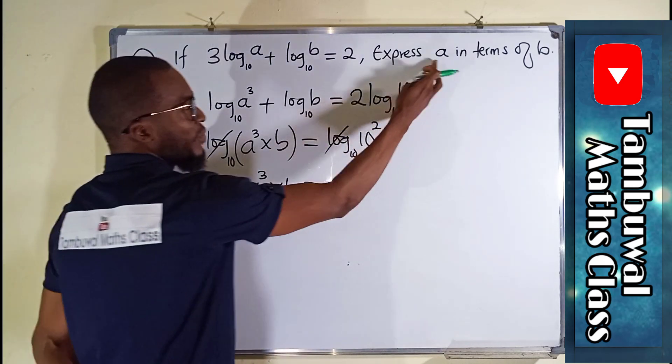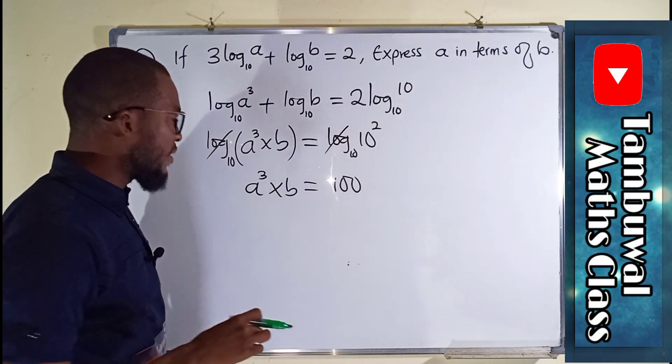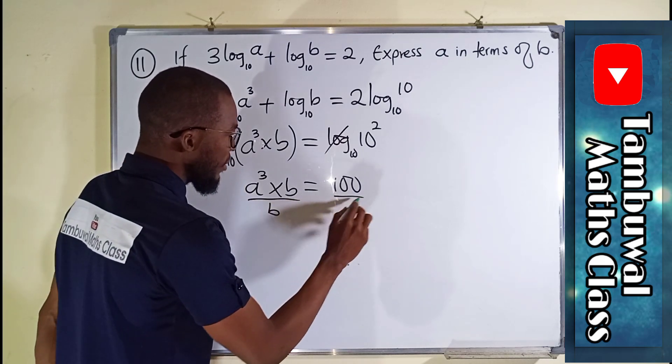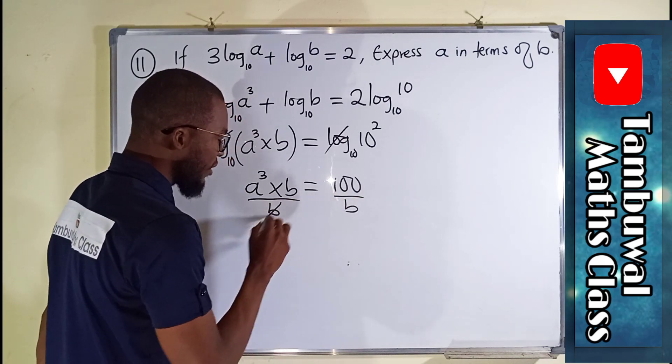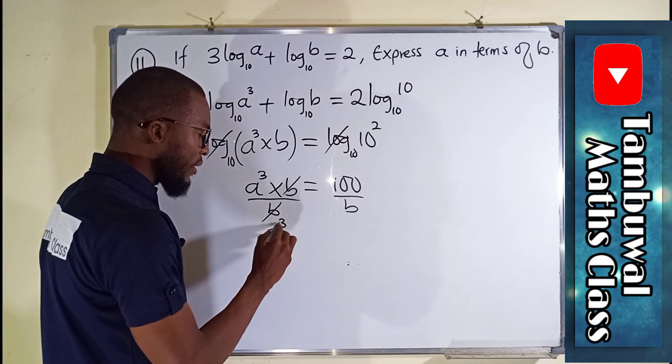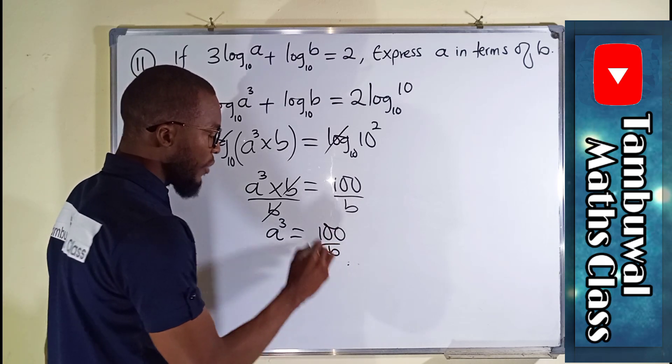What we are asked to do is to express A in terms of B, meaning we should make A the subject. So we can divide both sides by B, such that this B cancels this B, leaving only A³ equals 100 over B.